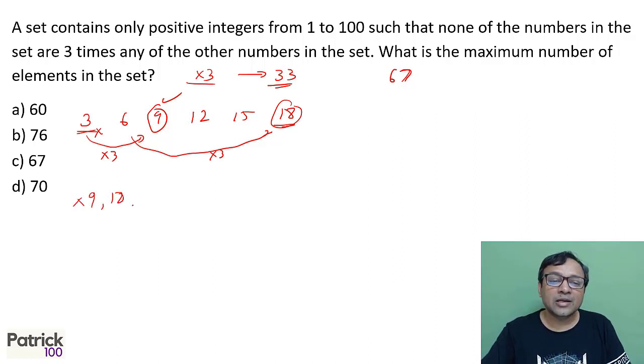9, 18, 27 up to 81, up to 99. Which are 11 terms. So I add 11, which are multiples of 9. But again there is a problem.